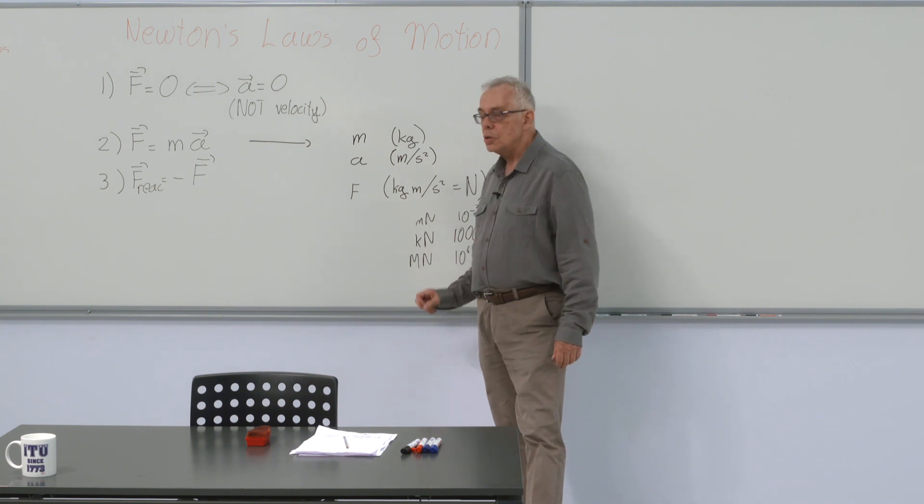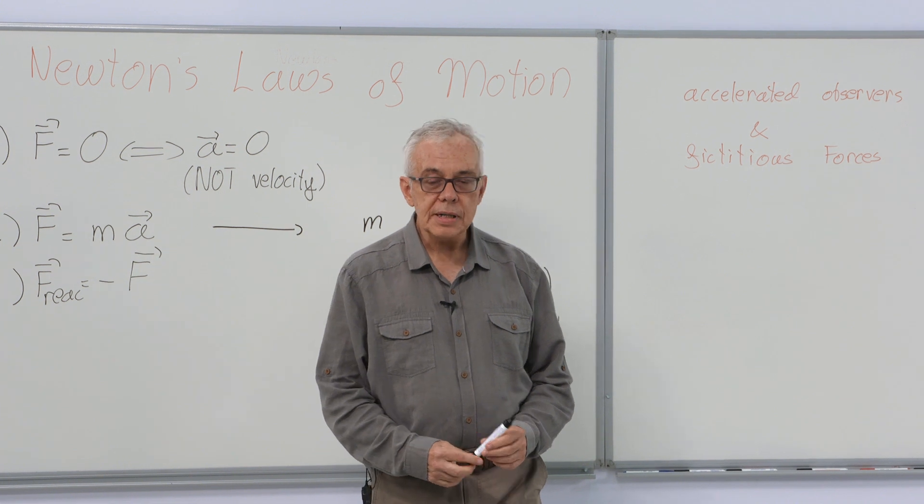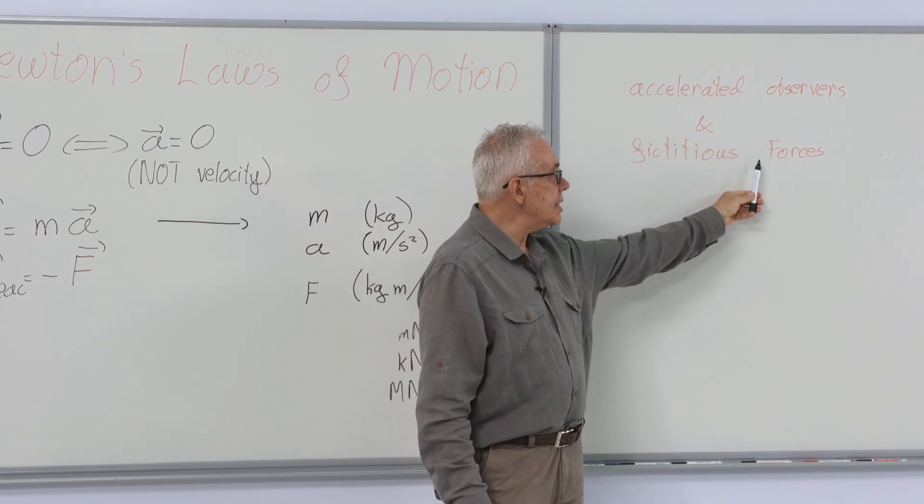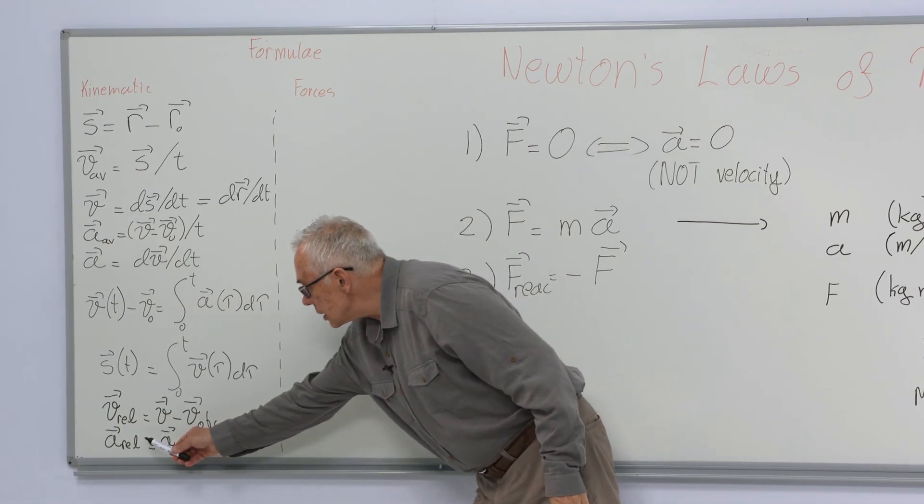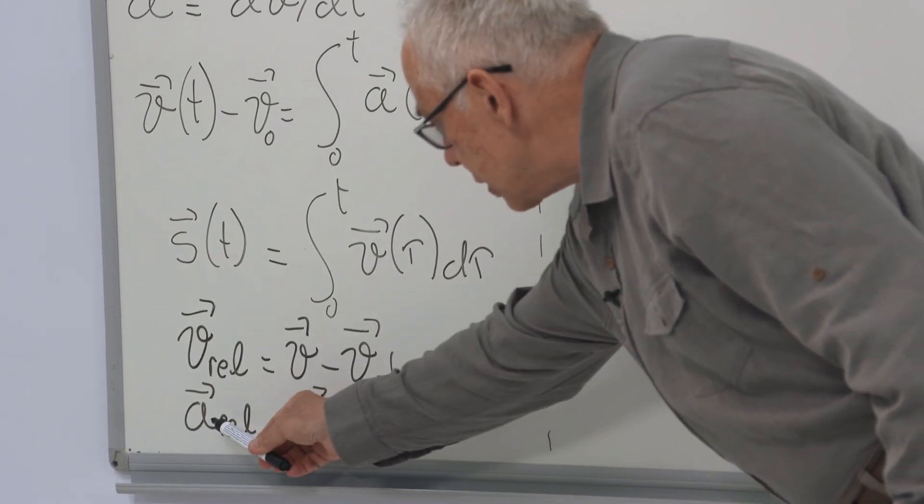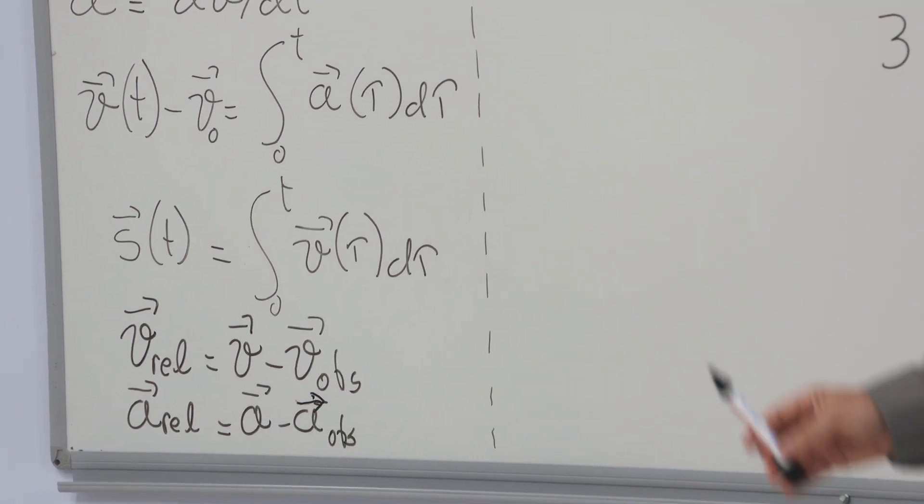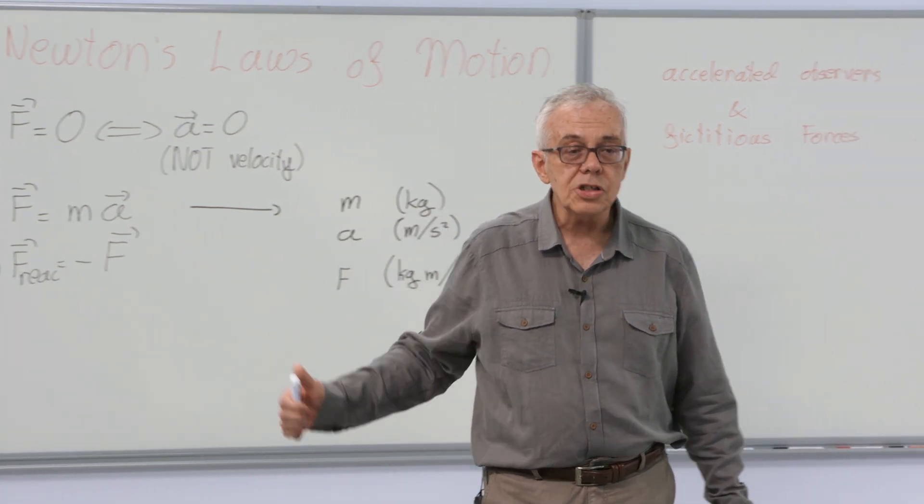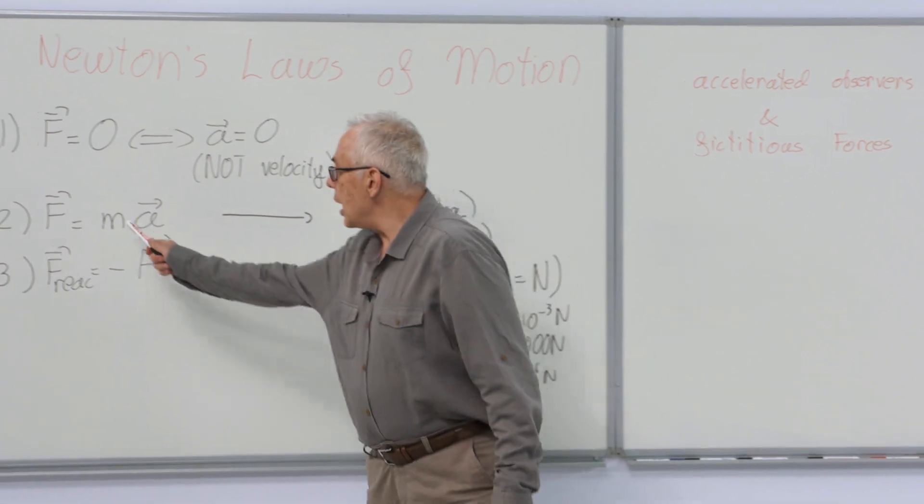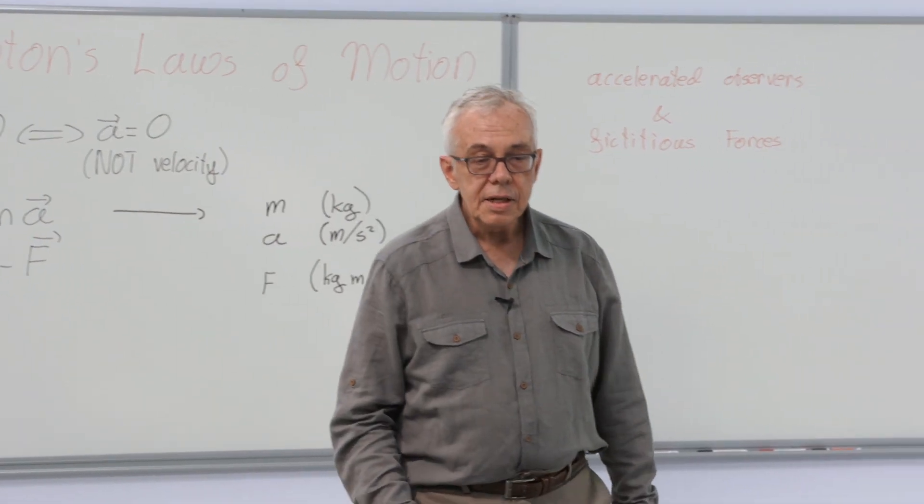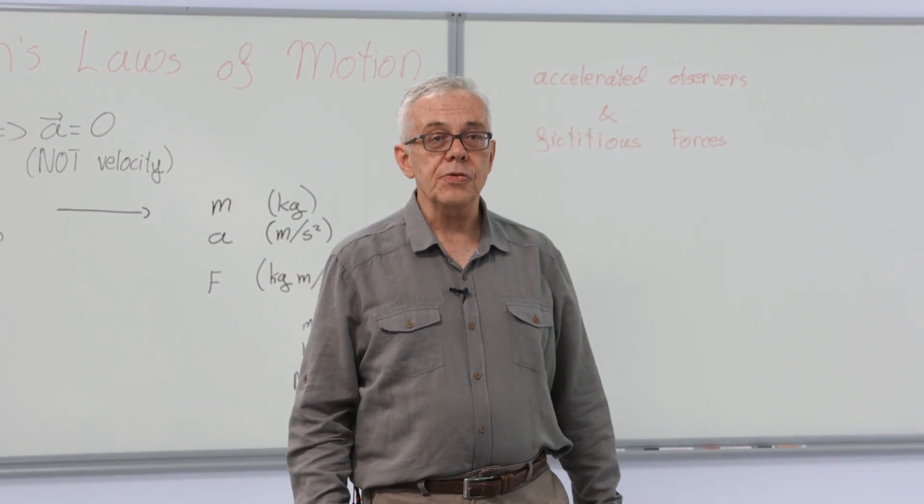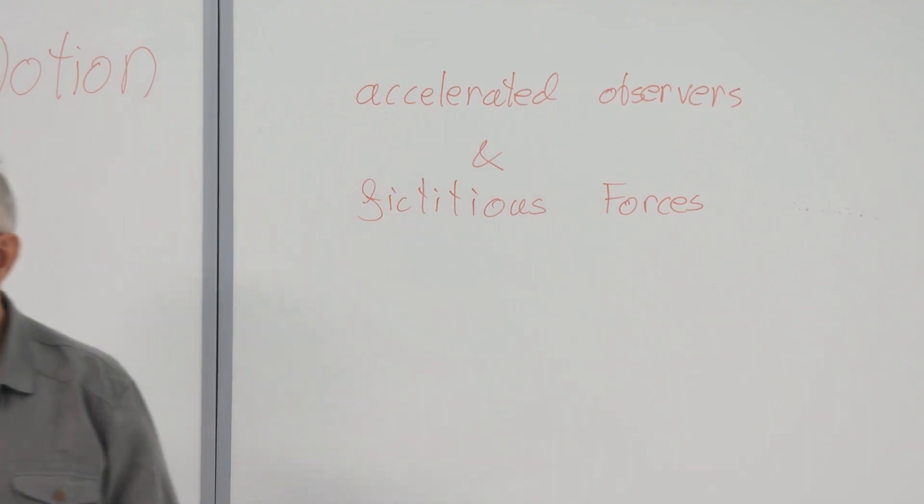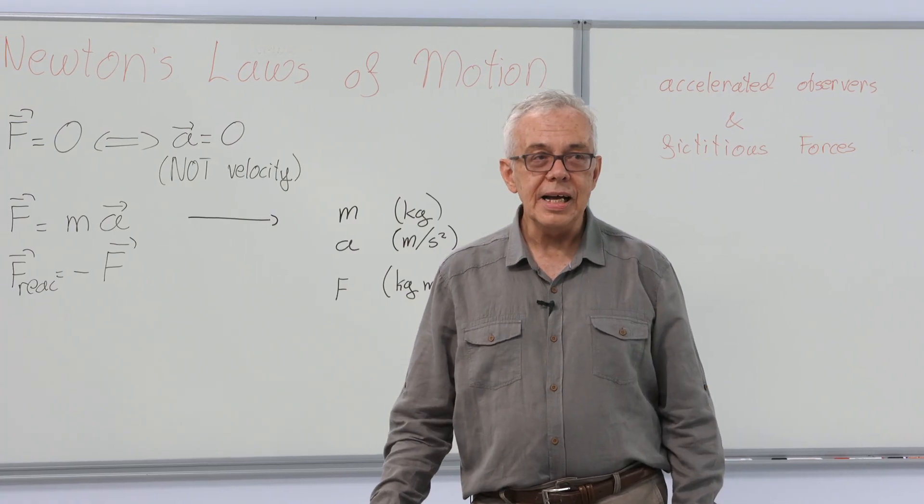The last topic we have to talk about in this chapter is about the forces seen by accelerated observers. These are called fictitious forces. We can see that the acceleration seen by an accelerated observer, the relative acceleration, is the acceleration of the object minus the acceleration of the observer. The acceleration is different from the actual acceleration. And since f equals ma is valid, then we must have some extraneous forces to account for this. These are not actual forces. So they are called fictitious forces and sometimes ghost forces. They are ghosts.